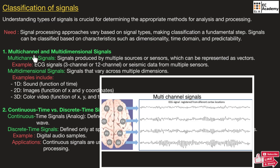The first type of signal is multi-channel and multi-dimensional signals. A multi-channel signal is produced by multiple sources or multiple sensors. Here a single source is known as a channel. If the signal is produced from multiple sources or multiple sensors, it is known as a multi-channel signal. These signals can be represented as a vector.